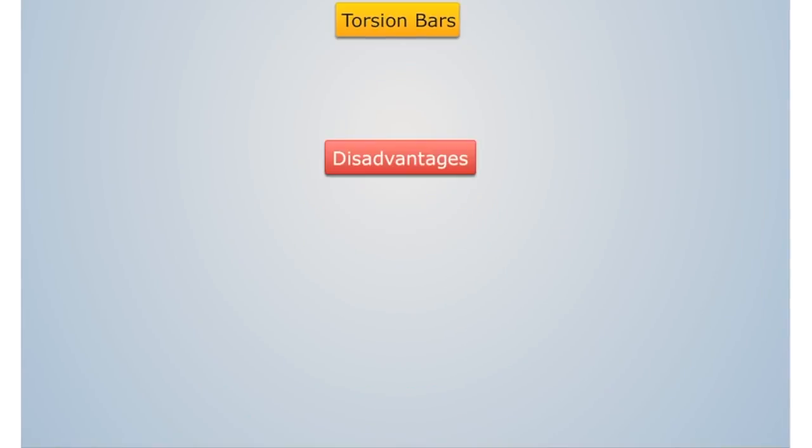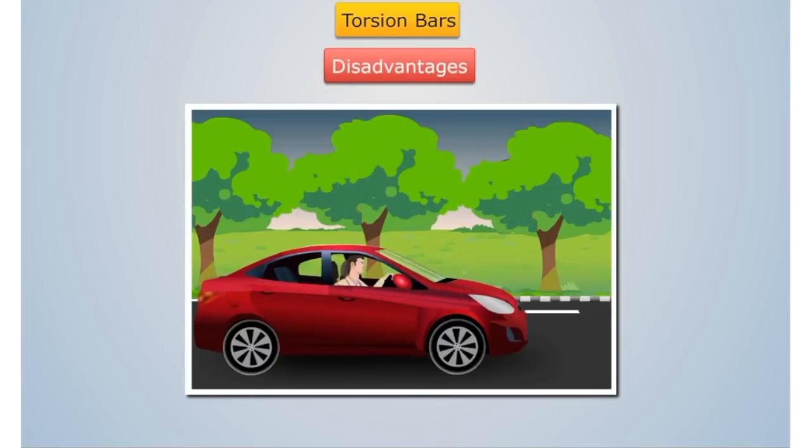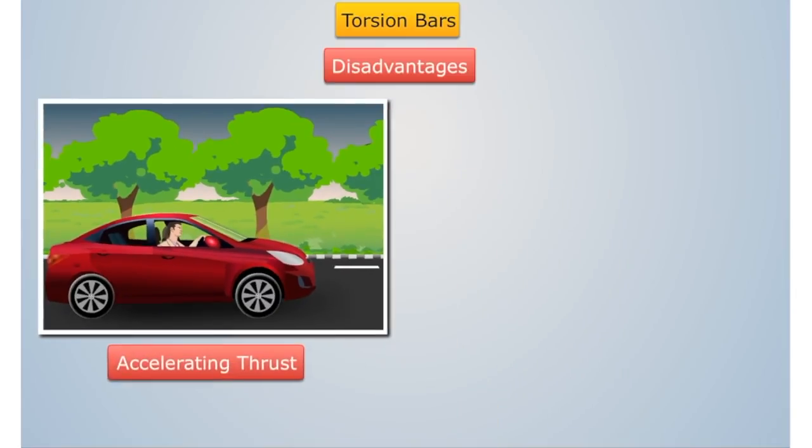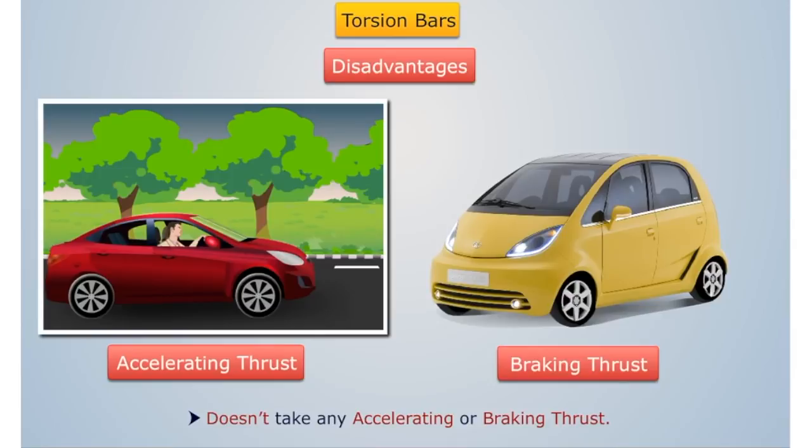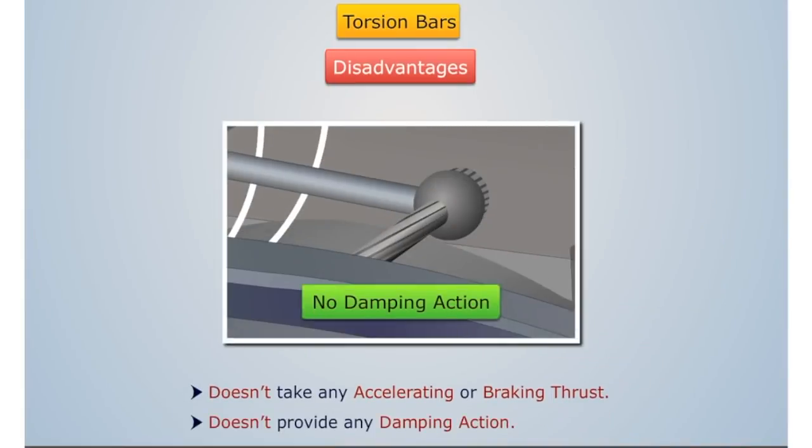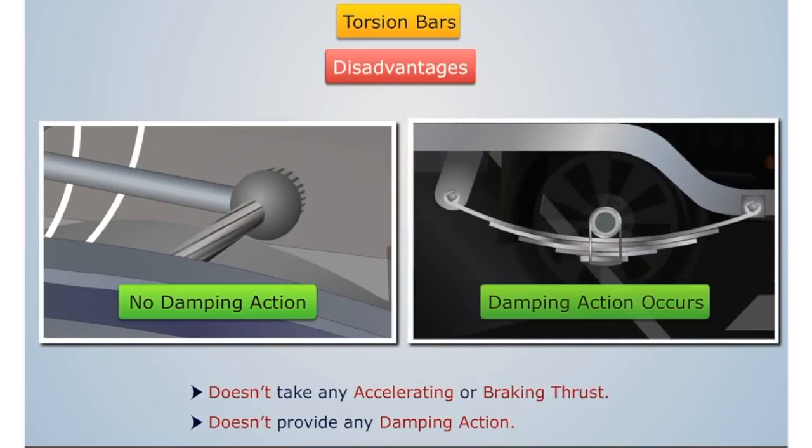For disadvantages, there are some disadvantages of torsion bar. The biggest disadvantage of torsion bar is that it doesn't take any accelerating or braking thrust, so additional advantages are to be provided for that. And torsion bar doesn't provide any damping action, while leaf spring has damping action.